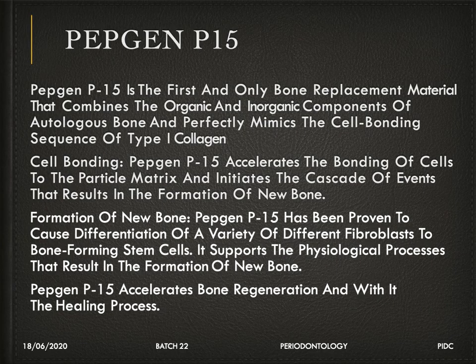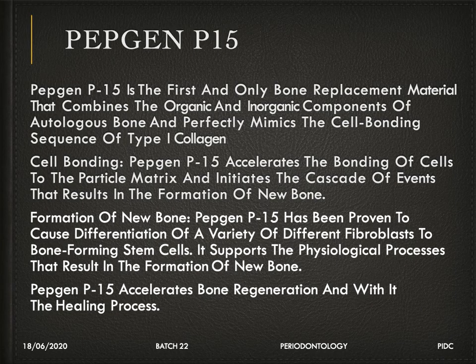Pepgen P15 is the first bone replacement material combining organic and inorganic components of allogenous bone, mimicking the cell-binding sequence of type I collagen. The cell-binding P15 peptide accelerates binding of cells to the particle matrix and initiates a cascade of events resulting in new bone formation, causing differentiation of various fibroblasts into bone-forming cells. Pepgen P15 supports physiological processes that result in new bone formation and accelerates bone regeneration within the healing process.